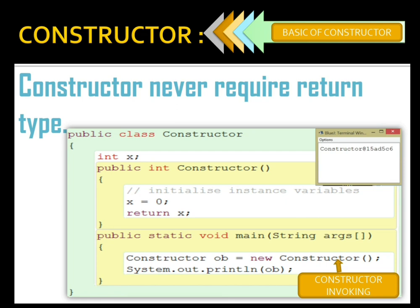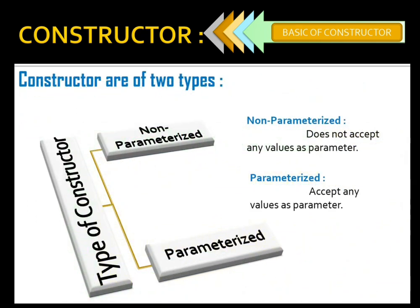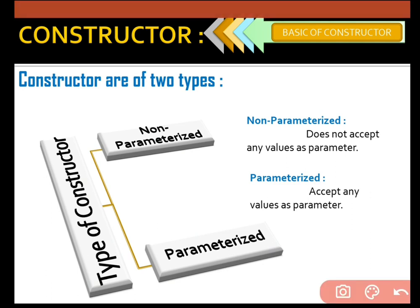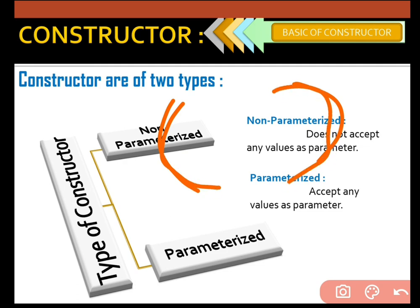If we are going to display an object, we get the address of that object. Moving further: constructors are of two types — non-parameterized and parameterized. Non-parameterized means we don't have any parameter inside the constructor. Parameterized means it accepts some value as a parameter. Whatever we write inside the function bracket is a parameter. If it is empty, it is non-parameterized; if we have something inside it, it is parameterized.